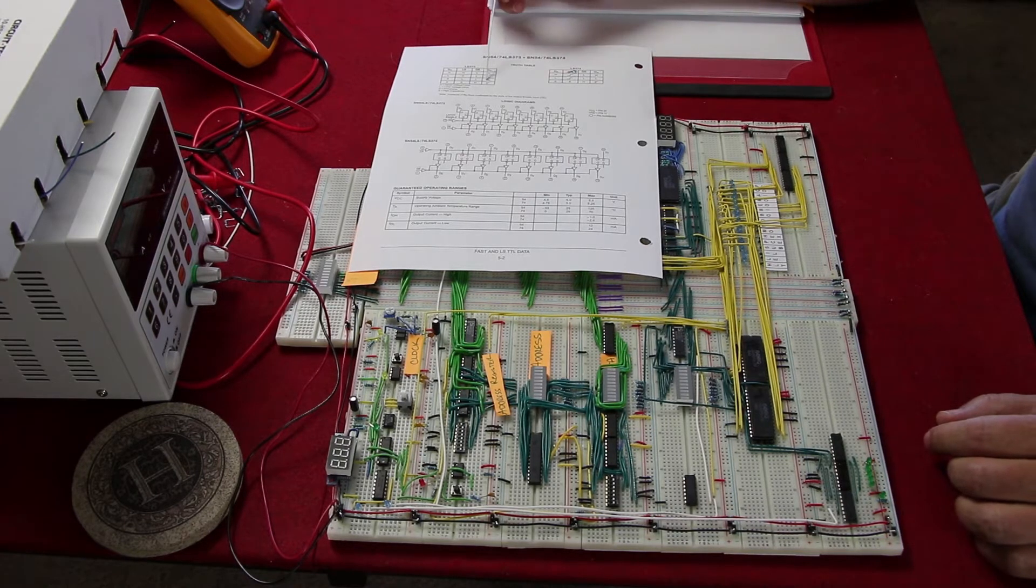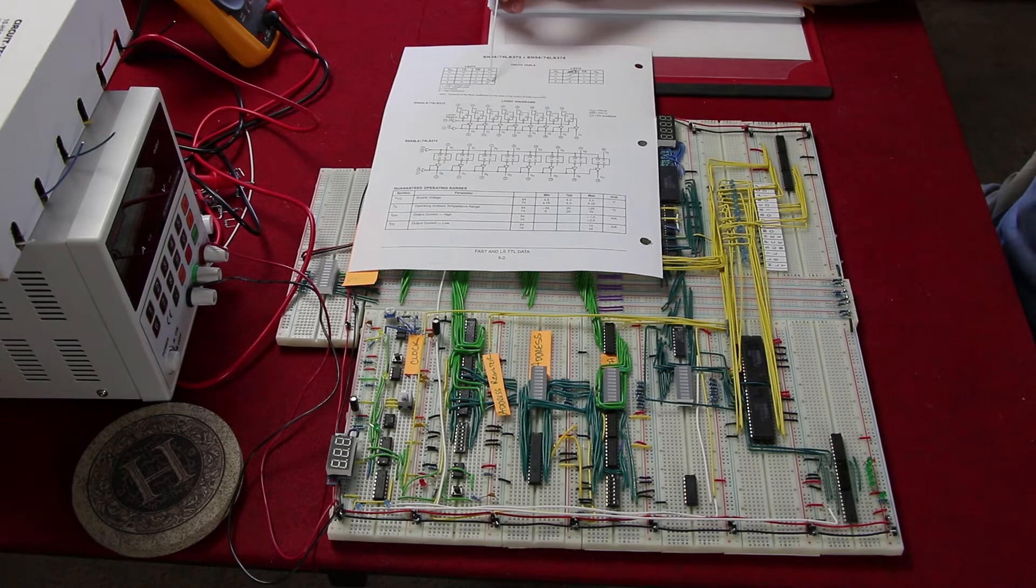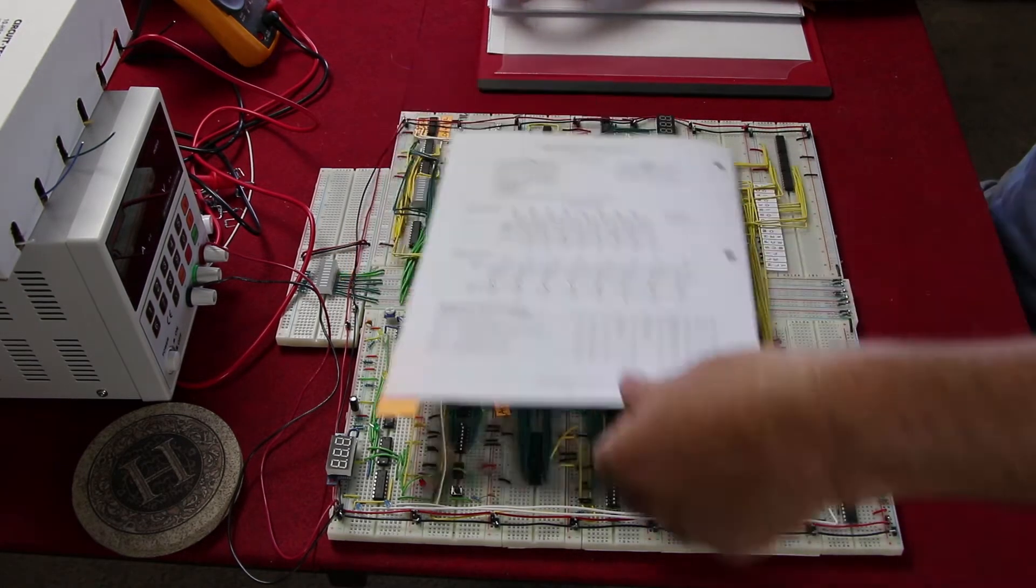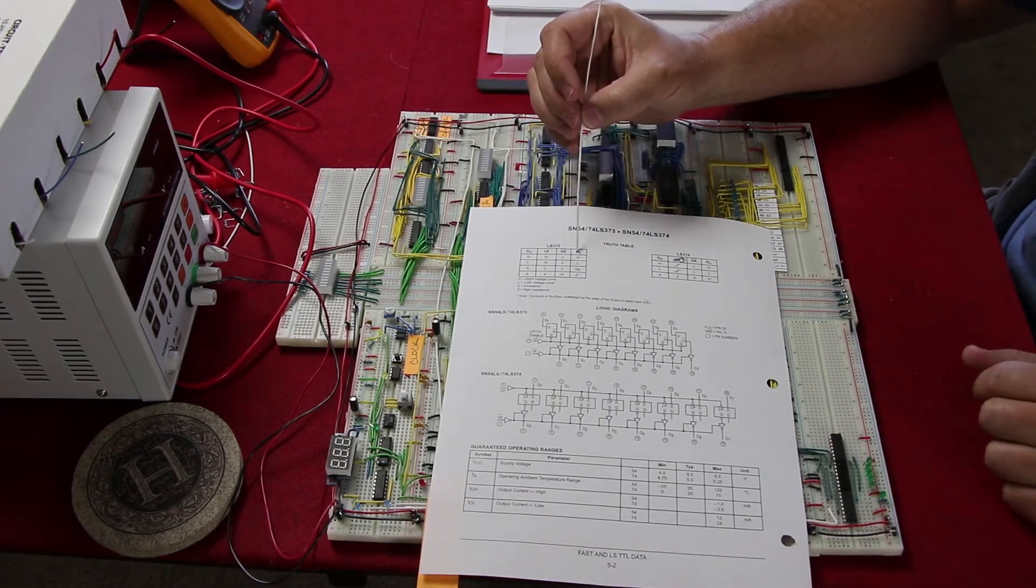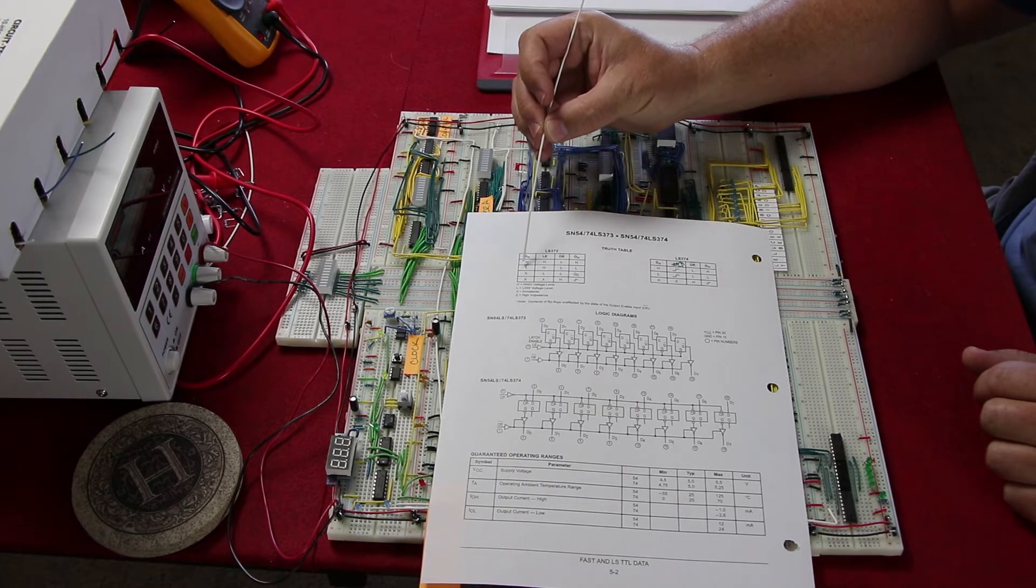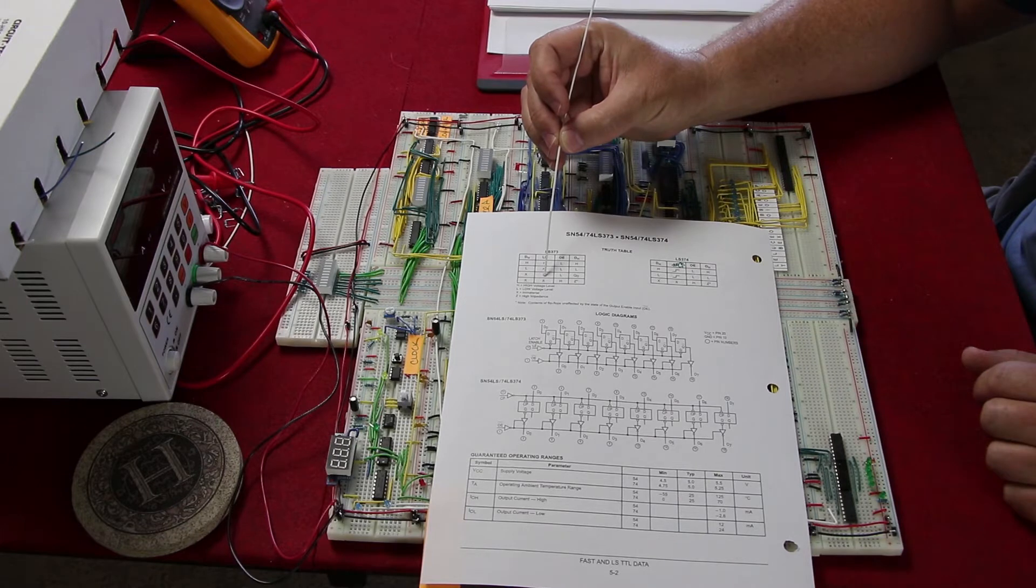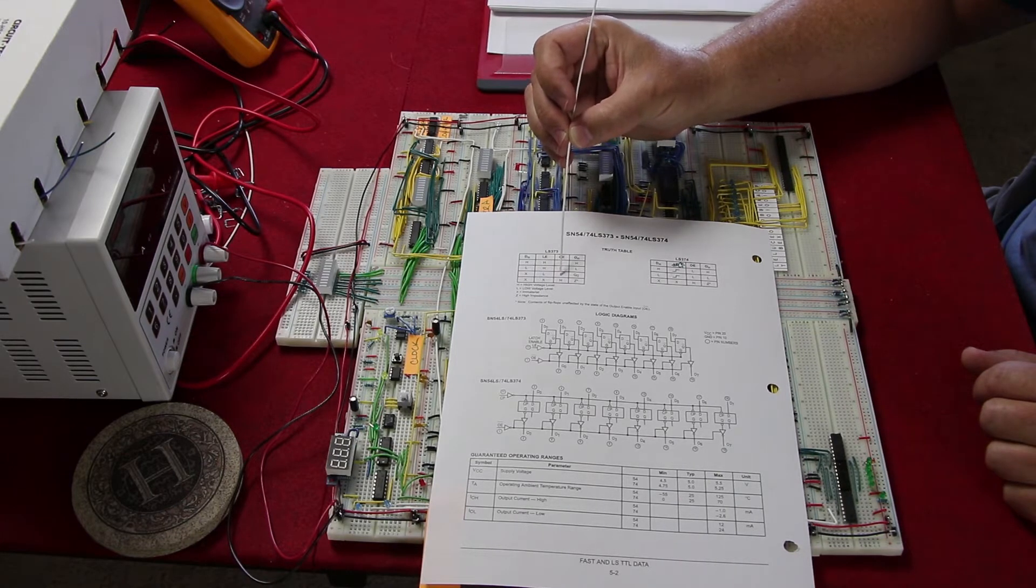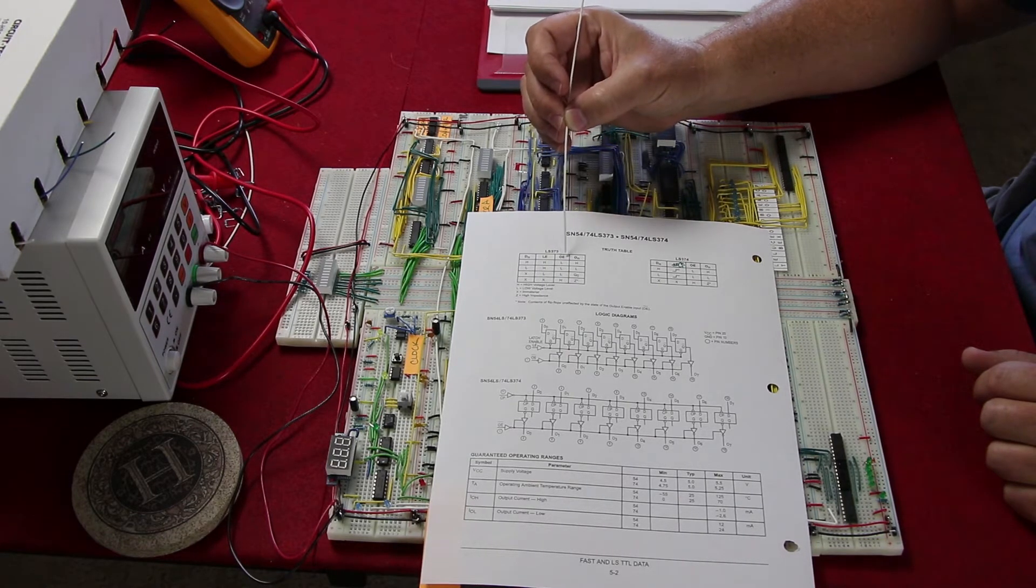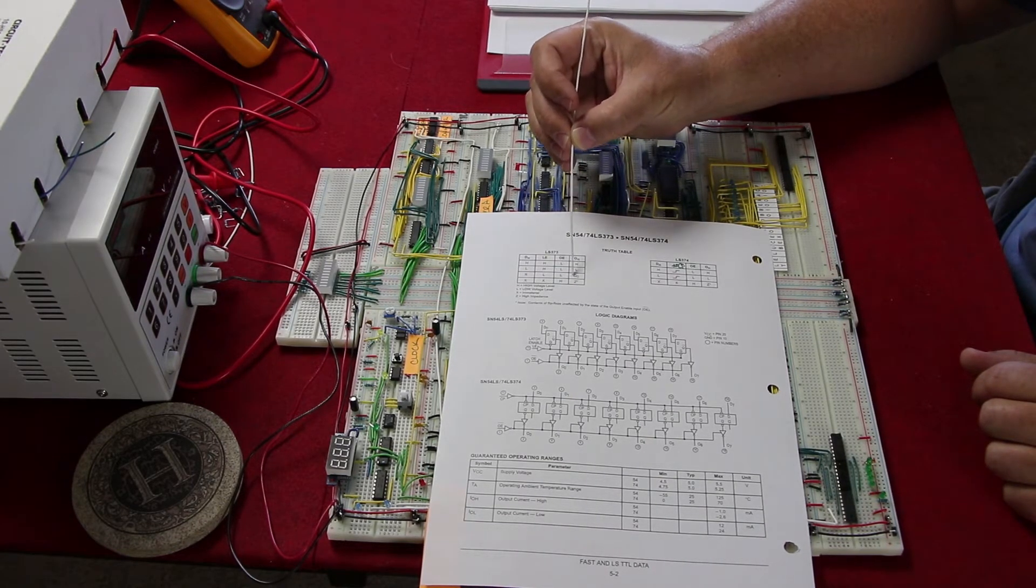When your latch enable and output enable is low, output enable is low triggered, your output Q0 means that it will send out whatever you had input into it the first time. Here, output enable, when the latch enable is high, that's when you're programming it. Your data that you're sending in is going to go into the latch, and when your latch enable is low and your output enable, which is triggered low, it's going to give you back the data that you had.